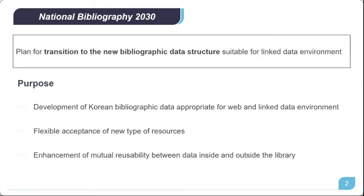The plan was announced in July 2021 by the Metadata and Sustainable Access Division. It has three main purposes: development of Korean bibliographic data appropriate for web and linked data environments; flexible acceptance of new types of resources; and enhancement of mutual reusability between data inside and outside the library.